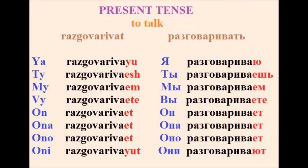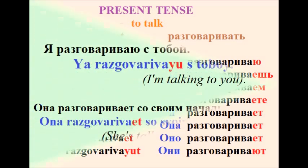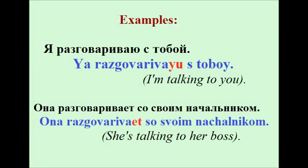Now разговаривать — 'to talk'. Present tense: Я разговариваю, ты разговариваешь, мы разговариваем, вы разговариваете, он разговаривает, она разговаривает, оно разговаривает, они разговаривают. Examples: Я разговариваю с тобой — I am talking with you. Она разговаривает со своим начальником — She is talking with her boss.